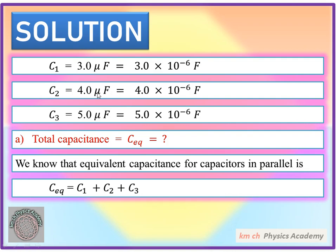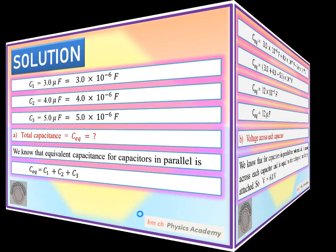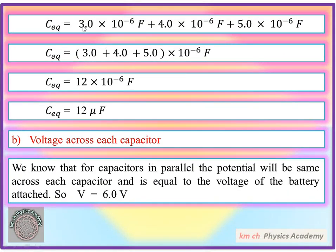C2 is 4.0 microfarad, which is 4.0 × 10⁻⁶ F. And C3 is 5.0 microfarad, which is 5.0 × 10⁻⁶ F. For total capacitance, which we call C equivalent, we know that the equivalent capacitance for capacitors in parallel is C_eq = C1 + C2 + C3. Putting in the values: C_eq = 3.0 × 10⁻⁶ F + 4.0 × 10⁻⁶ F + 5.0 × 10⁻⁶ F.